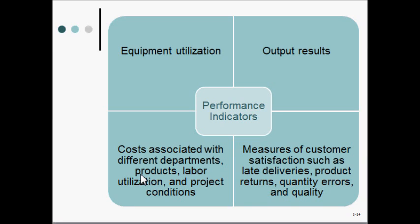We also have customer satisfaction as measured in terms of late deliveries, any returns because of quality issues, or quantity errors — less or more than what was expected. This is where the link between the MPS and the MRP — if there's a mismatch between the two — or a link between demand planning and sales and operations planning — if there's a mismatch — customer satisfaction will be affected. We want to consider all these performance indicators together to understand how well the MPC system is performing, and once we know how we are doing versus how we should be doing, we may know whether the MPC system has to be changed or maintained.